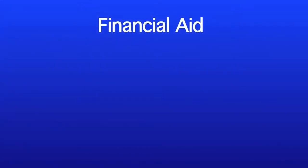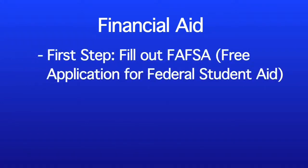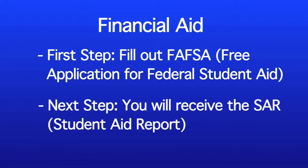The first step in applying for federal financial aid is completing the FAFSA form, or the Free Application for Federal Student Aid. After you've completed the FAFSA online, the Federal Student Aid Processor will email back to you a document called the Student Aid Report, or SAR for short.